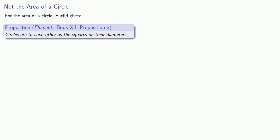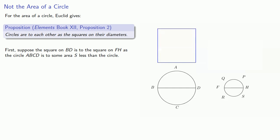So for the area of a circle, Euclid proves, Book 12, Proposition 2, circles are to each other as the squares on their diameters. Euclid proves this by contradiction. First, suppose the square on BD is to the square on FH, as the circle is to some area less than the circle.